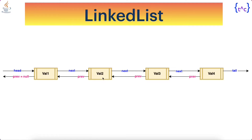Similarly, the second node holding val2 also holds the address of the next node, and that next node holds val3. This node also holds the address of the previous node — that is where we call it a doubly linked list. Each node holds the addresses of both the next node and the previous node — two-way.